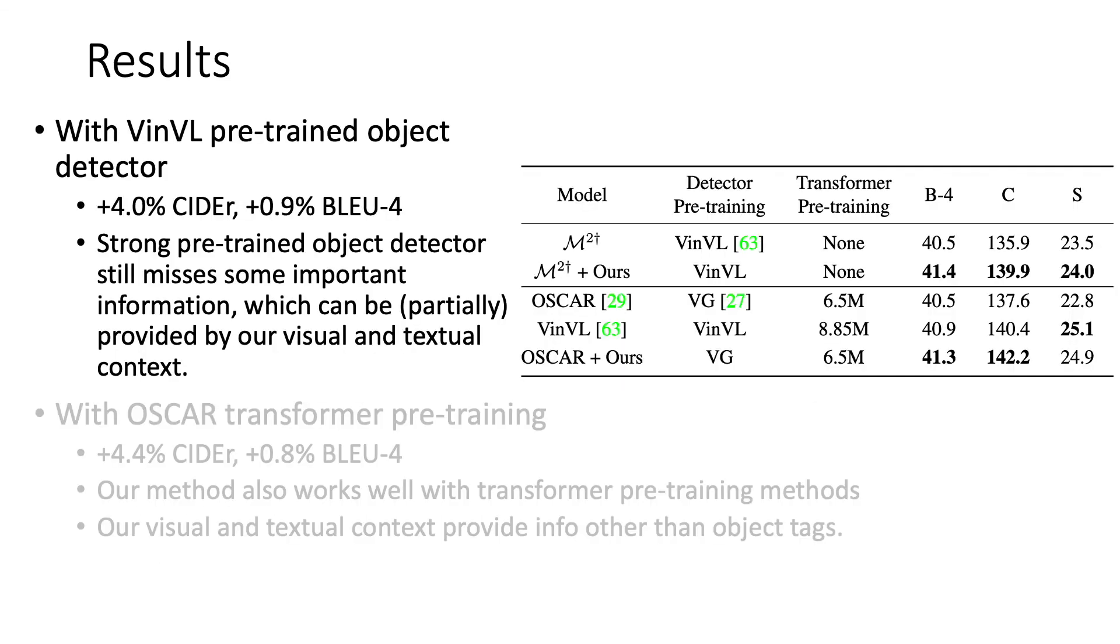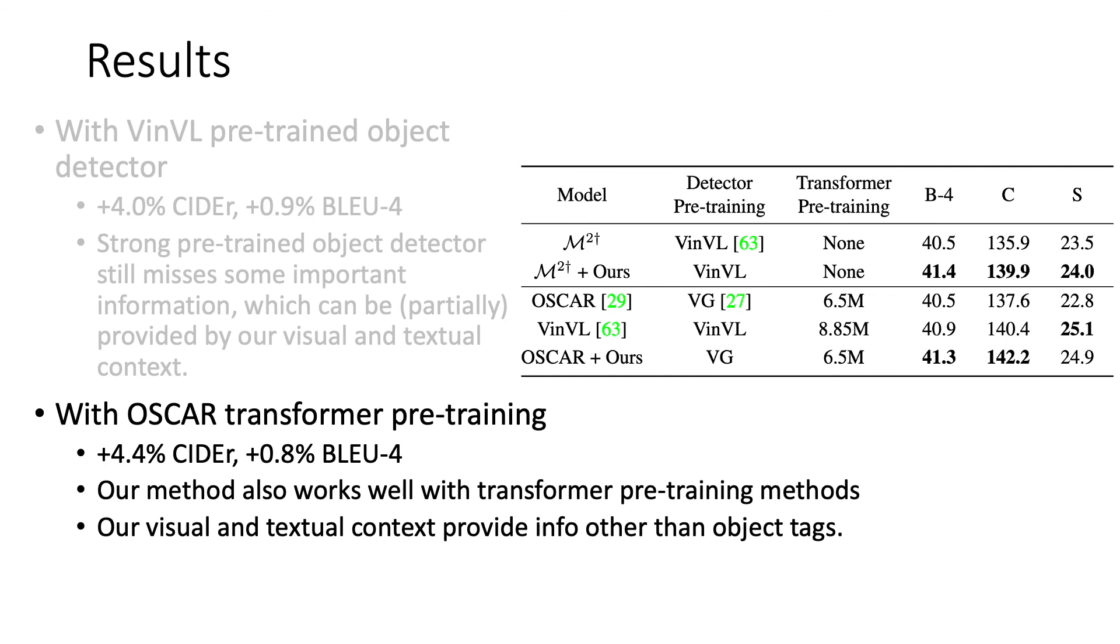We also experiment with a strong VINVL pre-trained detector, and our method still achieves a significant performance improvement. This indicates that a strong pre-trained detector still misses some important information, which can be provided by our proposed visual and textual contexts. When incorporated into an OSCAR transformer pre-training method, our method again achieves a substantial performance improvement. This means that our method also works well with the transformer pre-training methods, and that our visual and textual contexts provide information other than the object text provided in the OSCAR method.